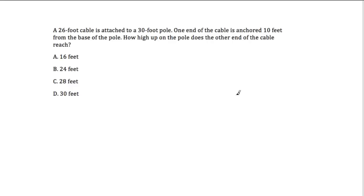Here's another one. This time we have a 26-foot cable that's attached to a 30-foot pole. So now we're told the pole length and the cable length. We have this 30-foot pole, and you have a 26-foot cable, which means that it's not going to go all the way to the top of the pole. It's going to hang down here somewhere, but it's not going to go all the way to the top.